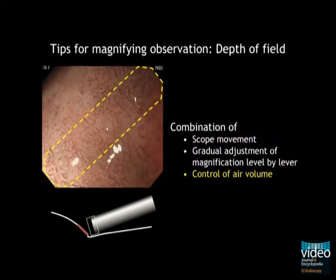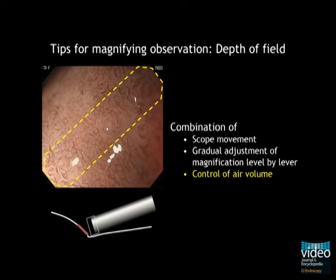Moreover, for magnifying observation, good focus can be obtained using a combination of scope movement, gradual adjustment of magnification level by a small lever, and control of air volume. Among them, air volume control is very important.